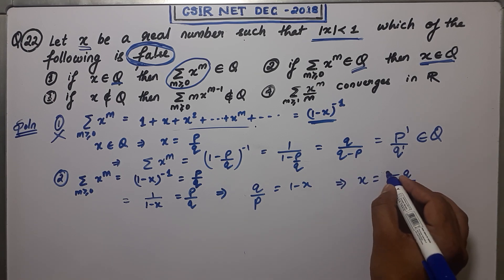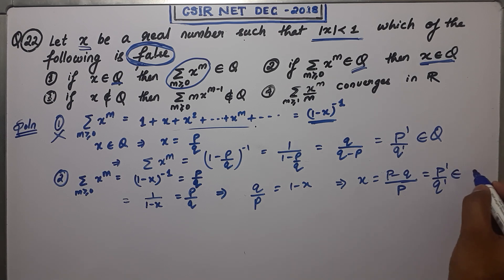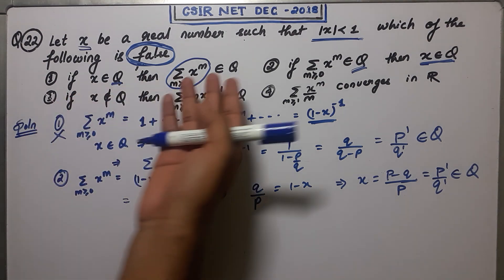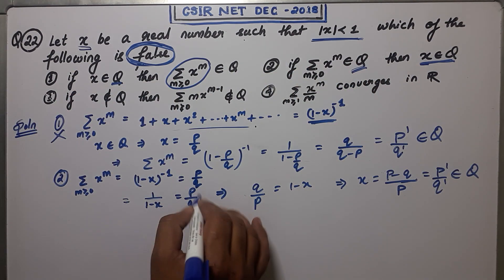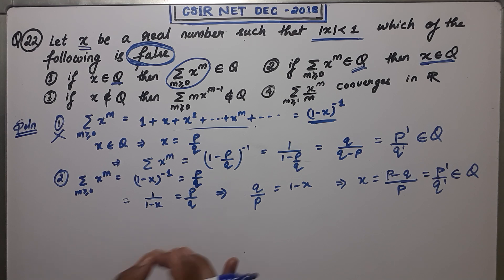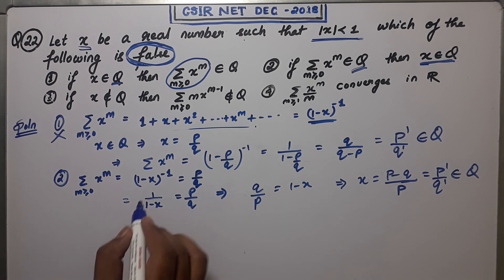Taking the LCM, you get x = 1 - q/p, which is again in the form p'/q' where p' ∈ Z and q' ∈ ℕ. So x again belongs to the set of rationals. I'm assuming x is non-zero, because if p/q is zero then things are trivially true. Assuming p/q is non-zero, we can take reciprocals and everything makes sense. So the second option is also correct.